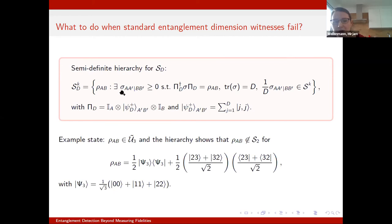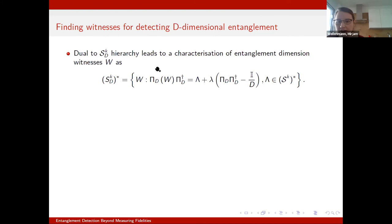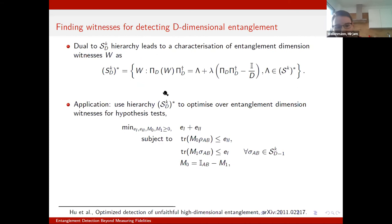One thing that may not be so satisfying is that for each state we have to run this hierarchy, and the way it's written, it doesn't directly give us a witness that we could still apply if we perturb the state a little, or that tells us what to measure for experimental certification. So we want to use this to construct entanglement witnesses. Because each level can be written as a semi-definite program, we can go to the dual. For each level, the dual gives a hierarchy of entanglement witnesses that grows with K. We can also refer to follow-up work done together with an experiment, showing this is useful not just theoretically but also in practice.